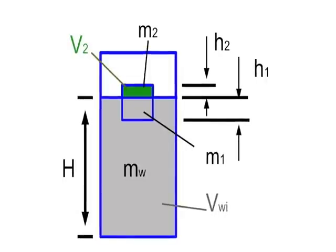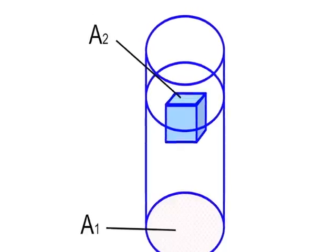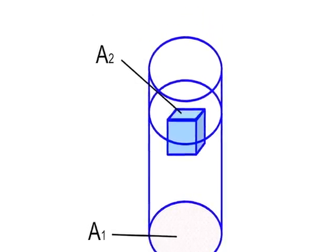MW represents the mass of the water while VWI represents the volume of the water and the ice underneath the water. A2 represents the surface area of the ice cube and A1 represents cross-sectional area of the glass.